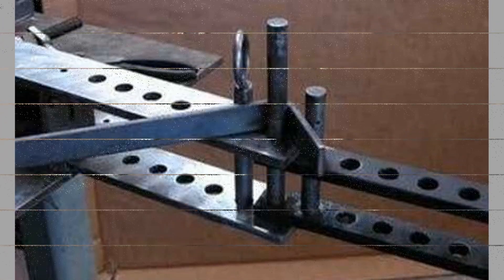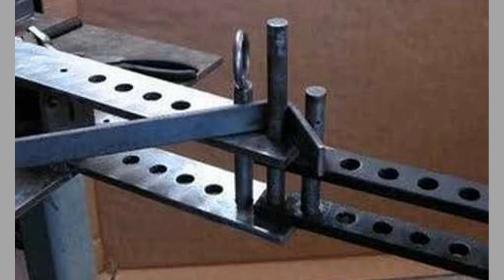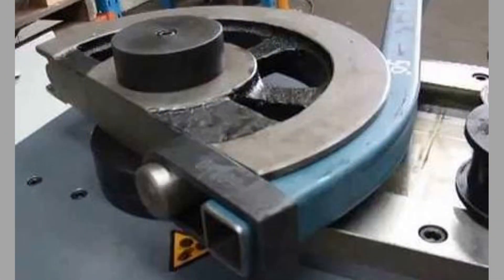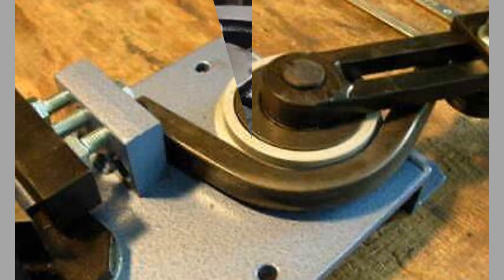Larger bend radii require about the same force for bottoming as they do for air bending. However, smaller radii require greater force, up to 5 times as much as air bending. Advantages of bottoming include greater accuracy and less spring back.